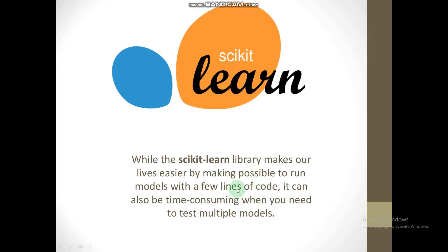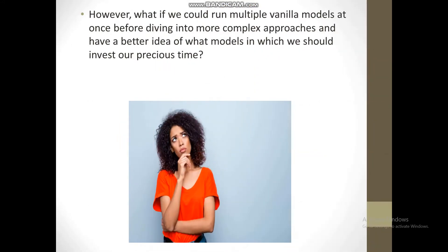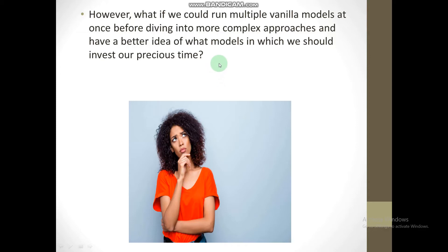So scikit-learn is there but it is not sufficient enough. The question is: what if we could run multiple vanilla models at once before diving into more complex approaches? This way we'd have a better idea of which models deserve our time, so we can focus on the model giving better accuracy instead of trial-and-erroring all of them.